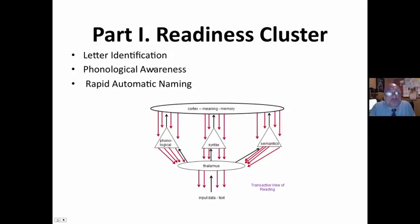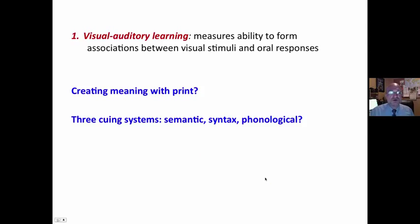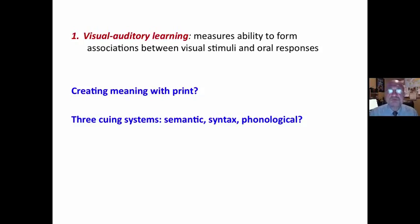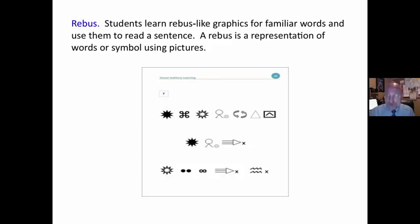Parts of the Woodcock Reading Mastery Test: the readiness cluster. We'll take a look at each one of them and ask, how does this reflect the transactive view of reading? Visual auditory learning measures the ability to form associations between visual stimuli and oral responses. This is important, but is it creating meaning with print? Is it focusing on the three cueing systems?